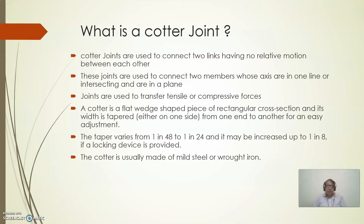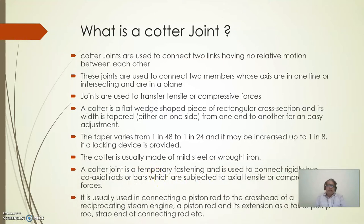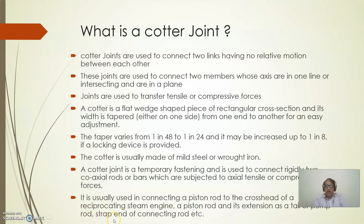The cotter is usually made up of mild steel or wrought iron. The cotter joint is a temporary joint used to connect two nearly coaxial rods. It transmits axial tensile or compressive forces. It is used in connecting a piston rod to the crosshead of a reciprocating steam engine, a piston rod and its extension as a tail or pump rod, or a strap end of a connecting rod.